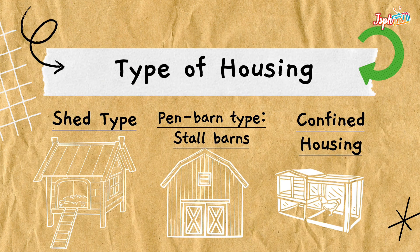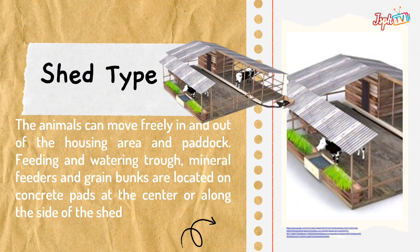We have three types of housing: the shed type, the pen barn type or stall barns, and the confined housing. For the shed type, the animals can move freely in and out of the housing area, and paddle feeding and watering troughs, mineral feeders, and green bunks are located on concrete pads at the center or along the side of the shed.